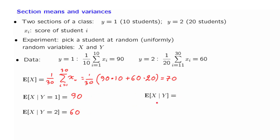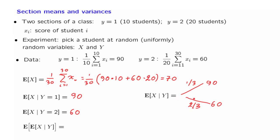With this information available, we can describe the abstract conditional expectation, which is a random variable. This random variable takes the value of 90 if a student from the first section was picked, and the value of 60 if a student from the second section was picked. The probability that a student from the first section was picked is 1 third — since the first section has 10 out of 30 students — and therefore the probability of the second section is 2 thirds. Now that we have the distribution of this random variable, we can calculate its expected value, which is 1 third times 90 plus 2 thirds times 60.